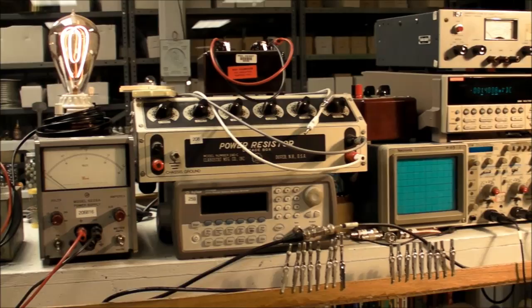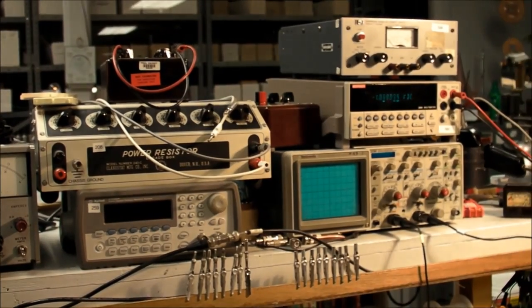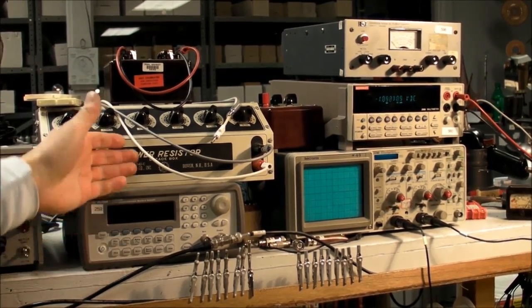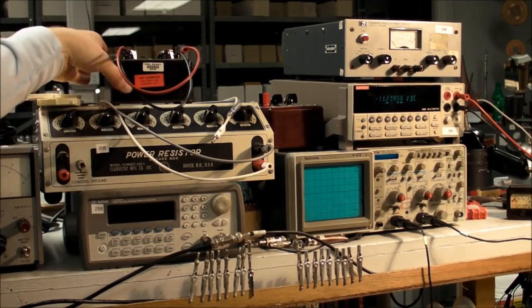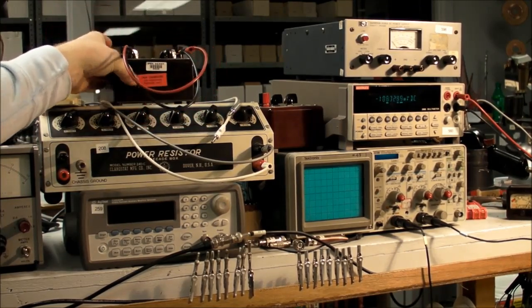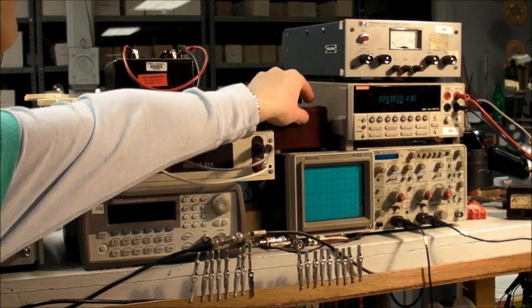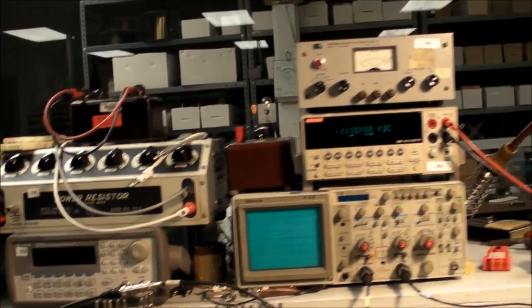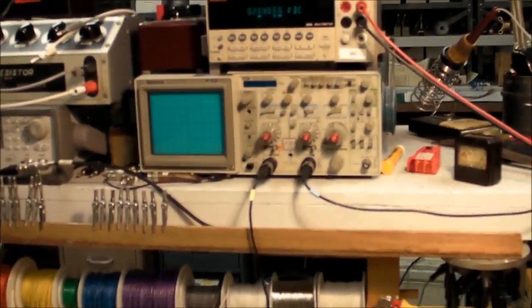And over here we've got Agilent 33220A function generator, some decade resistor box. Here's another decade resistance, decade capacitance, and good old-fashioned Tektronix 2236 oscilloscope.